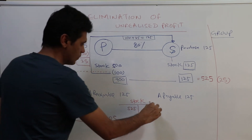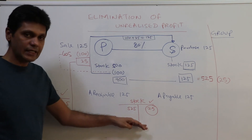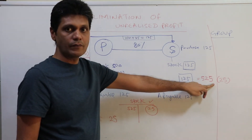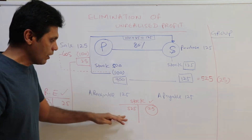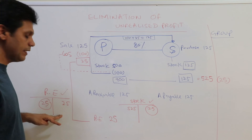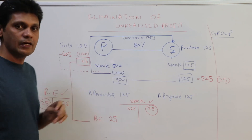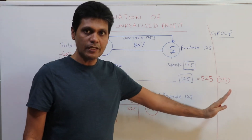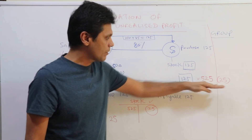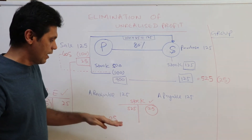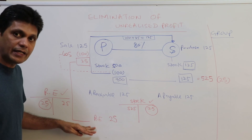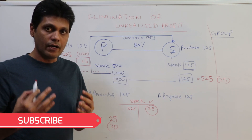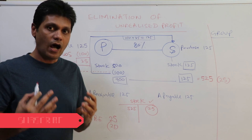And we credit the stock account. This is the entry needed to eliminate the unrealized profit from total stocks. The double entry is: debit retained earnings of the parent company (who recorded the profit) and credit the stock account. In the group financial statements, we remove the unrealized profit from both the stock balance and the retained earnings of the parent company.